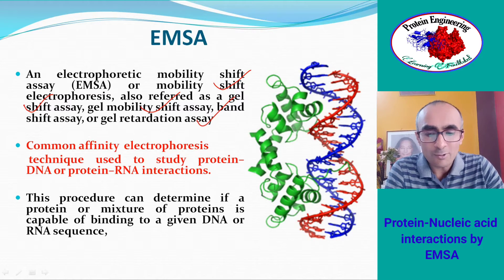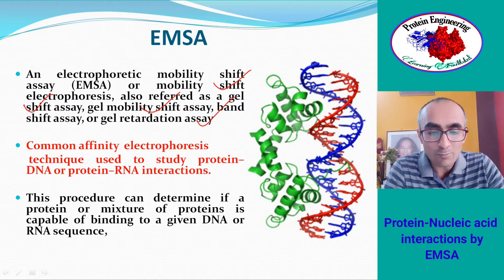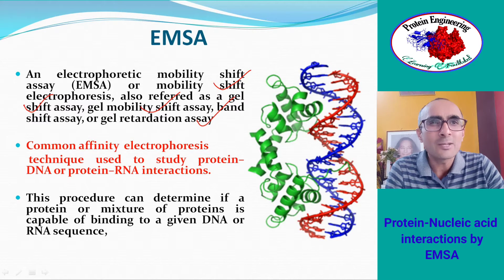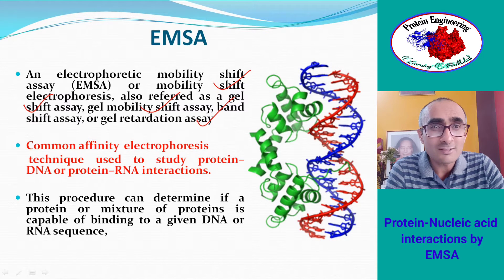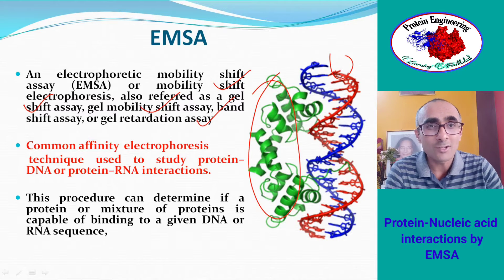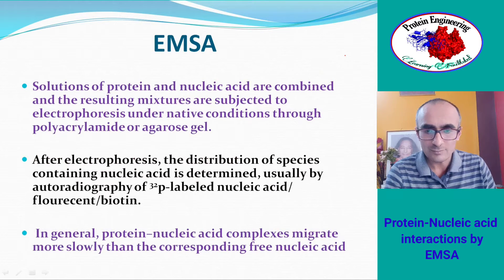EMSA is a very common affinity electrophoresis technique used to study protein and nucleic acid interactions. This procedure can determine if a protein or mixture of proteins is capable of binding to a given DNA or RNA sequence. We know that many proteins interact with nucleic acids — for example, transcription factors bind to DNA at specific sequences, and EMSA can be performed to identify which transcription factors bind to a given DNA sequence.